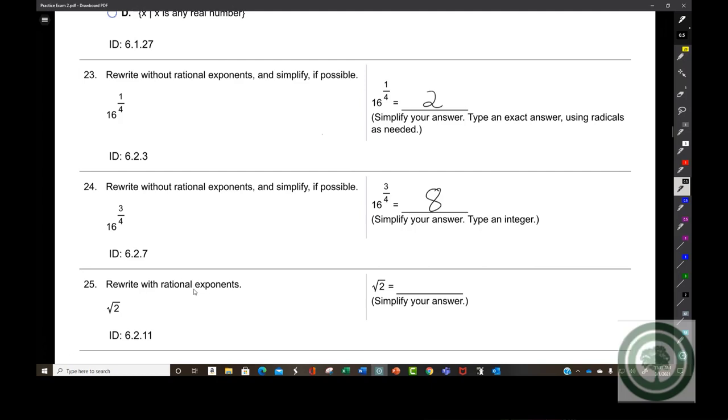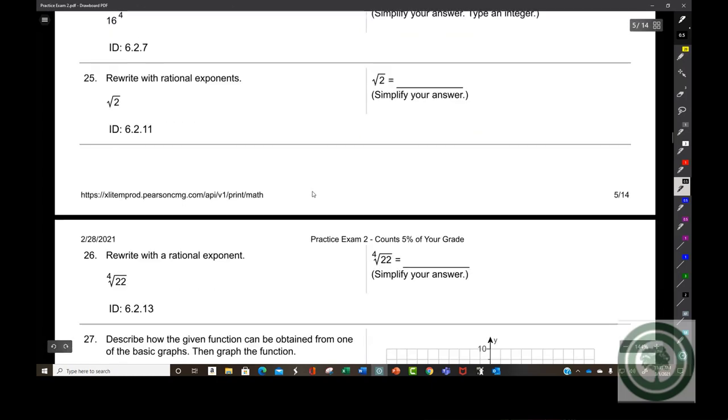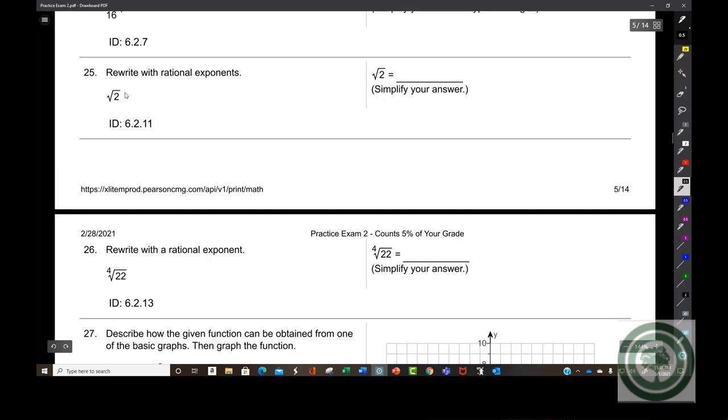Rewrite with rational exponents. You need to memorize that square roots are always 1 half powers. This is going to be your radicand 2, which now is the base of the exponent, to the 1 half power. That's all you're being asked to do. You cannot simplify that.